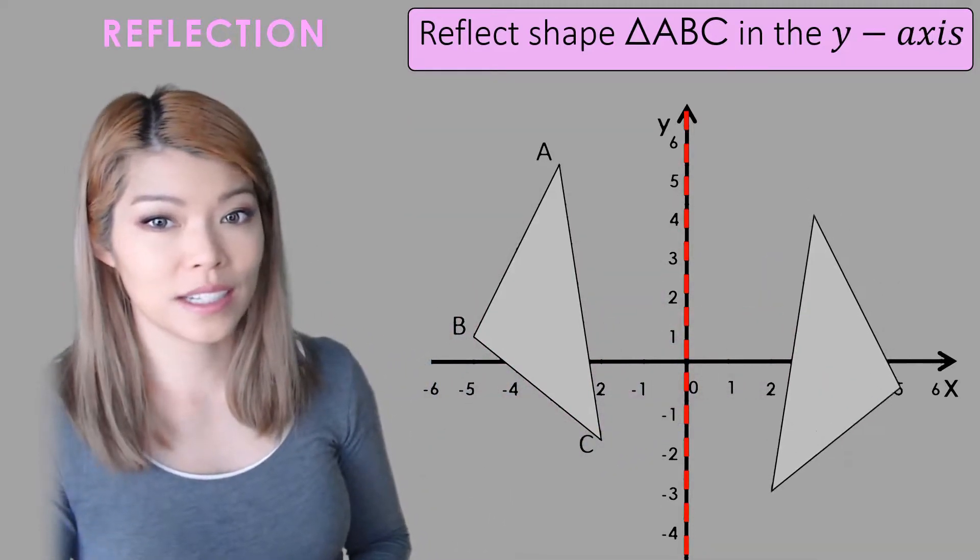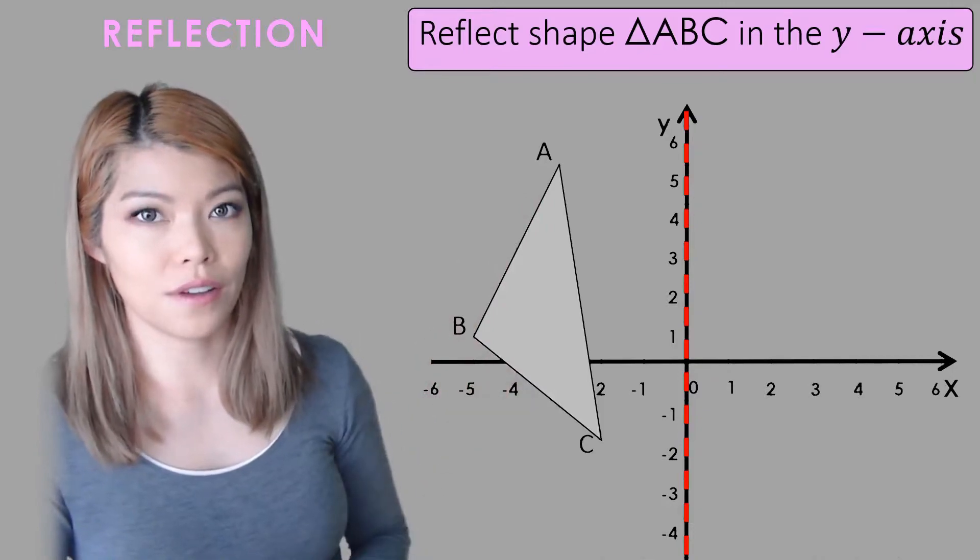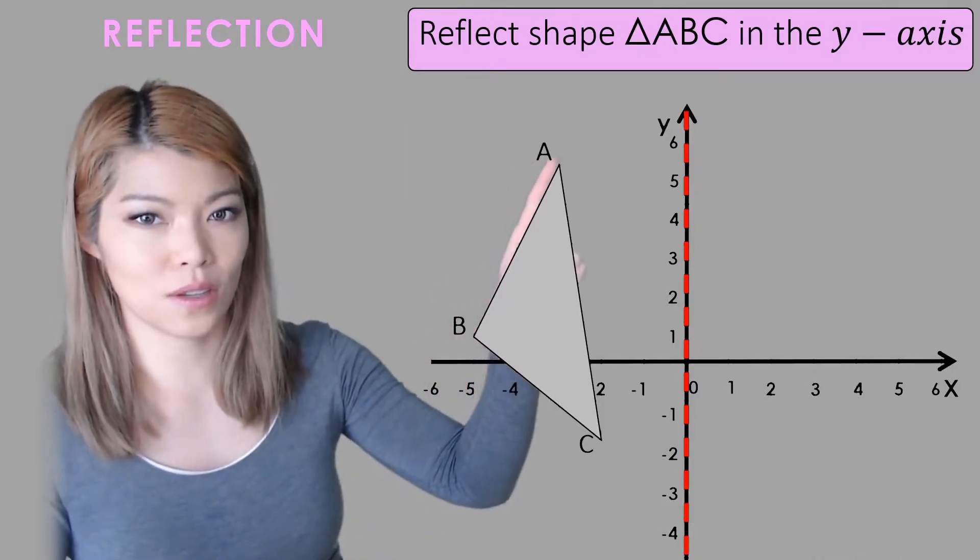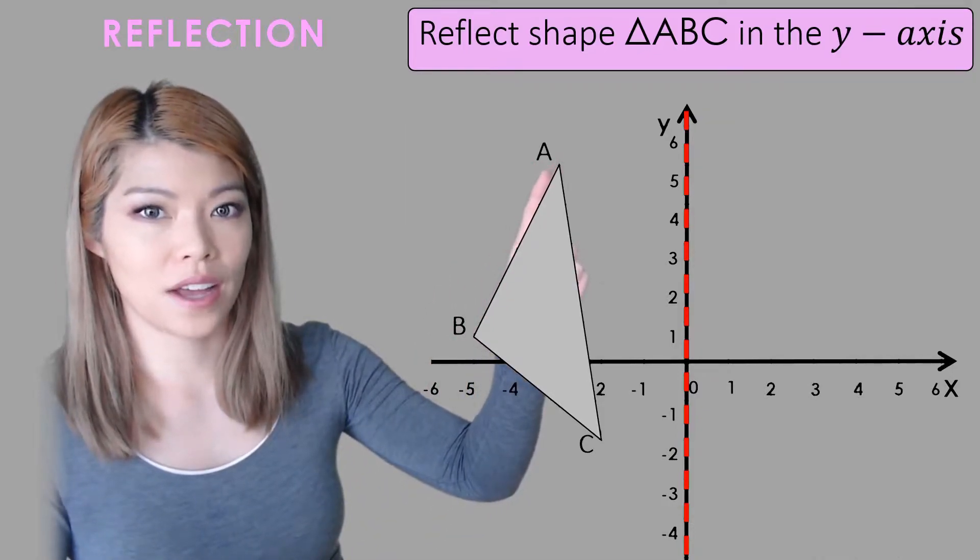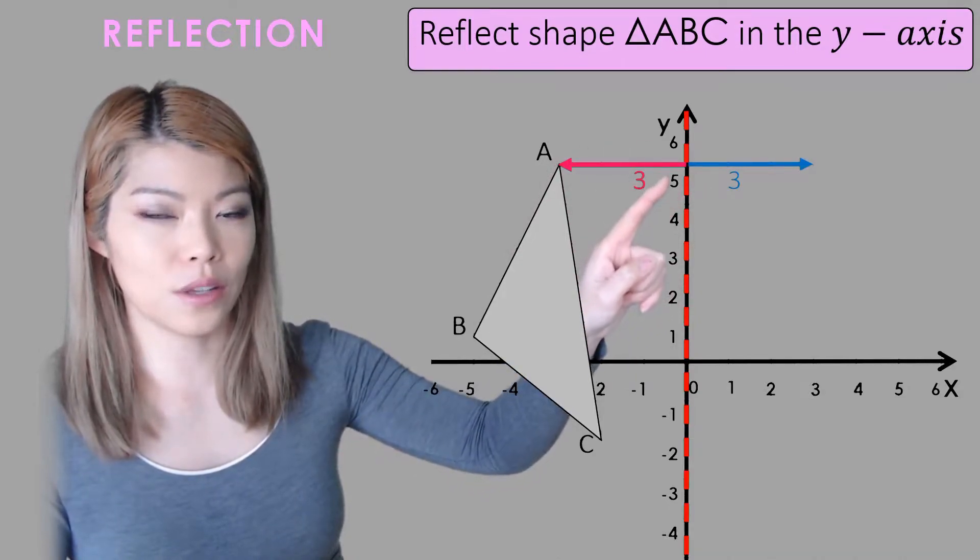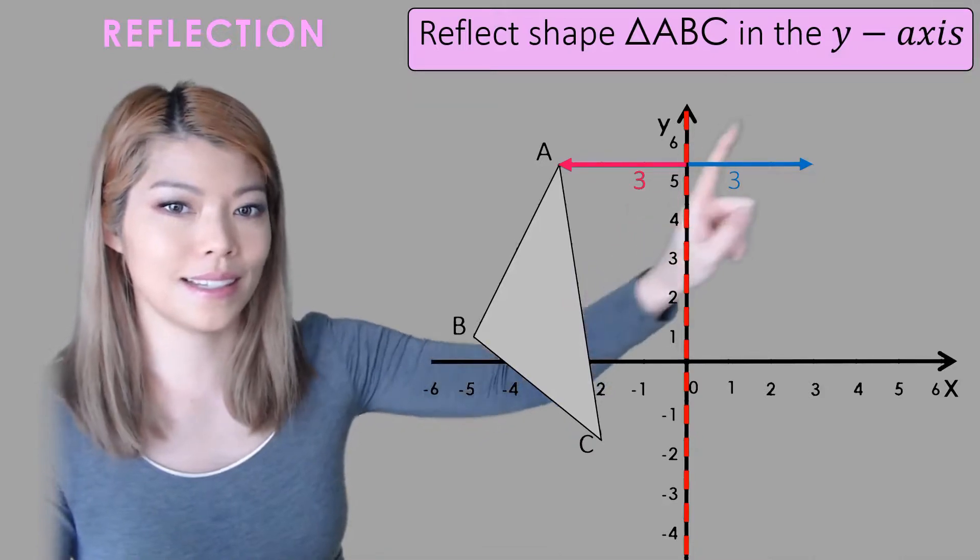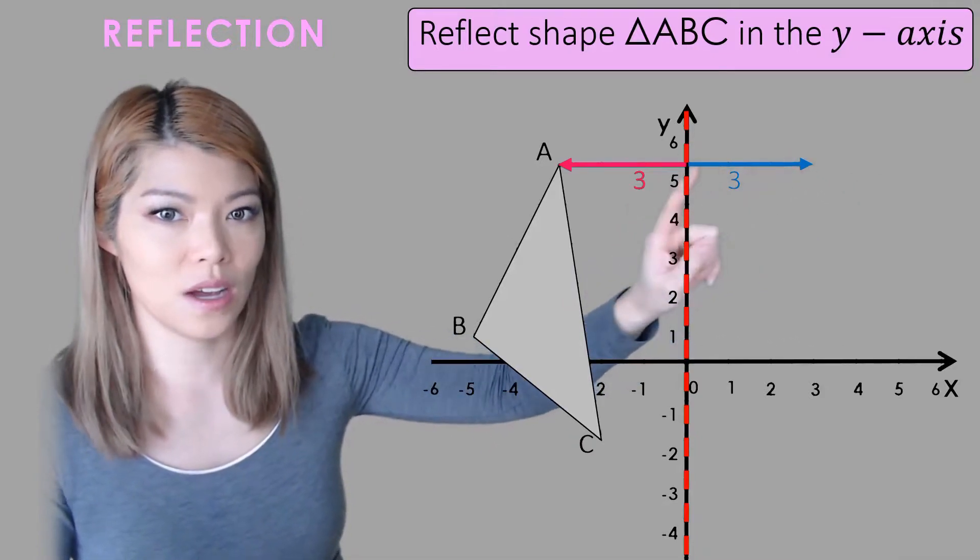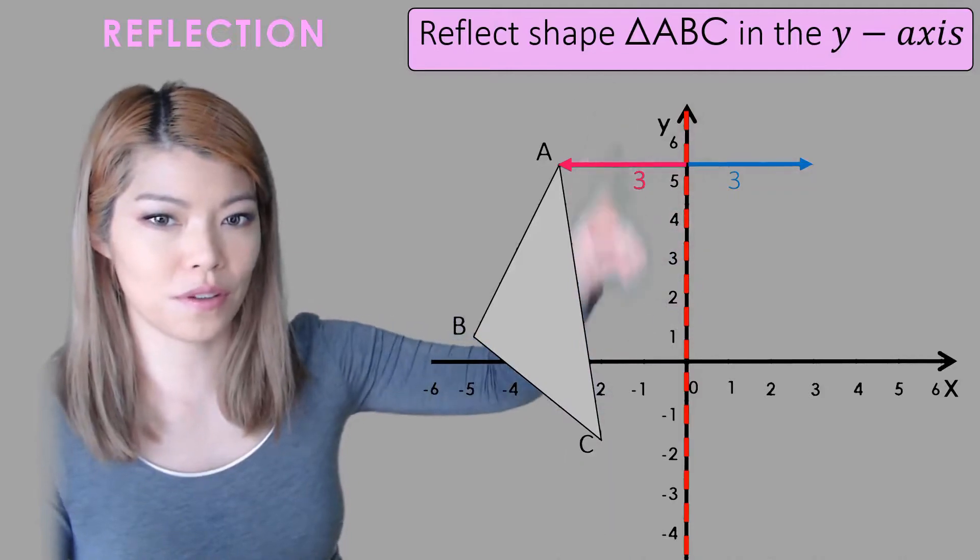Now how do we do it? We look at each corner or each vertex, so vertex means corner, and we see how far it is away from the mirror. For example, A is three spaces away, so now we find the exact same distance on the other side of the mirror or the other side of the y-axis. So label your mirror first.